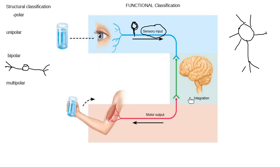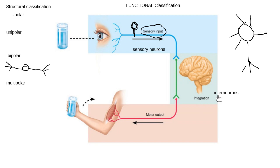Processing information is called integration. Integration is when you figure out what that sensory information means. Integration is done by a type of neuron called interneurons. So interneurons do integration — they collect information from sensory neurons, mix it all together to figure out what we should do with it, and then talk to motor neurons.